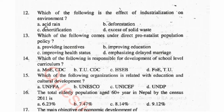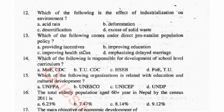Question 12: Which of the following is the effect of industrialization on the environment? Options: acid rain, deforestation, desertification, excess of solid waste. Question 13: Which of the following comes under direct pro-natalist population policy? Options: providing necessary incentives, improving education, improving health status, emphasizing delayed marriage.